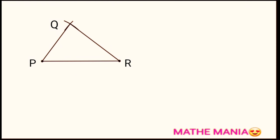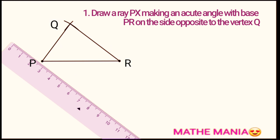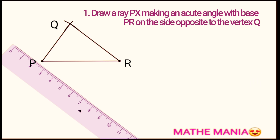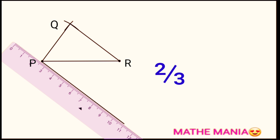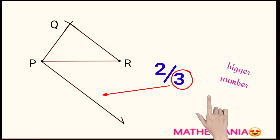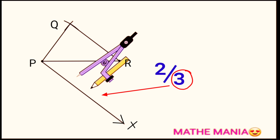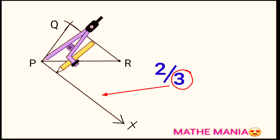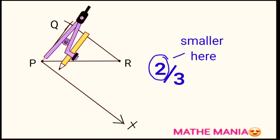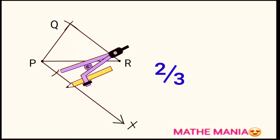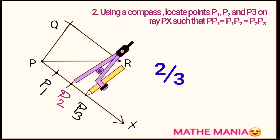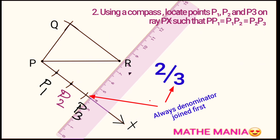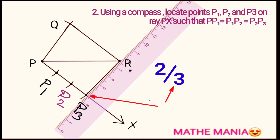Let's move on to the next step. We are going to repeat all the steps from our previous construction but with a minor change. The new triangle to be constructed should have sides two-thirds of the given triangle — 2/3 is called the scale factor. We are going to take the denominator, which is three, and draw three arcs on ray PX. If the numerator is smaller, the new triangle will be smaller, and if the numerator is bigger than the denominator, the new triangle will be bigger.